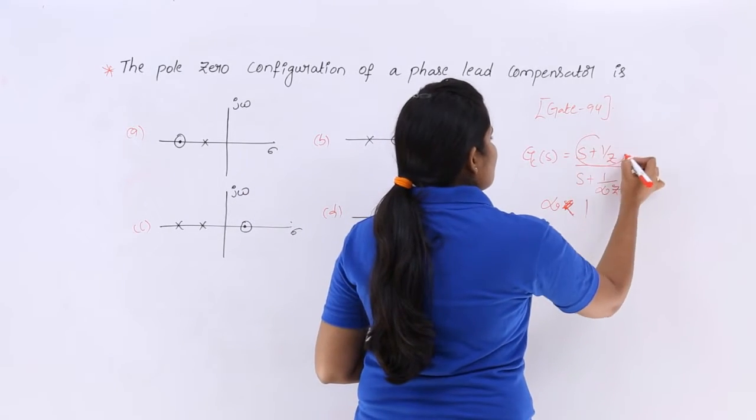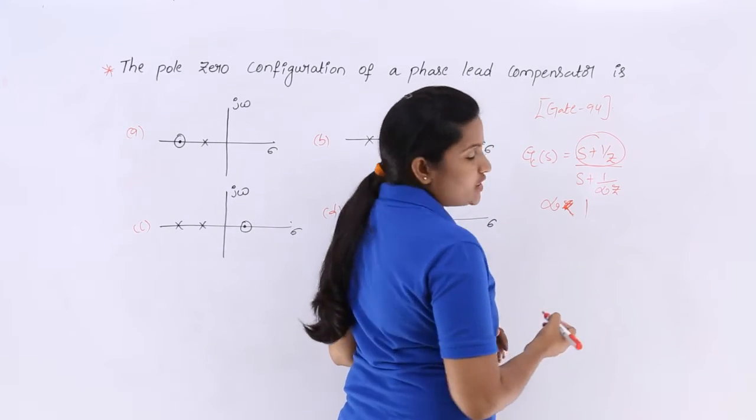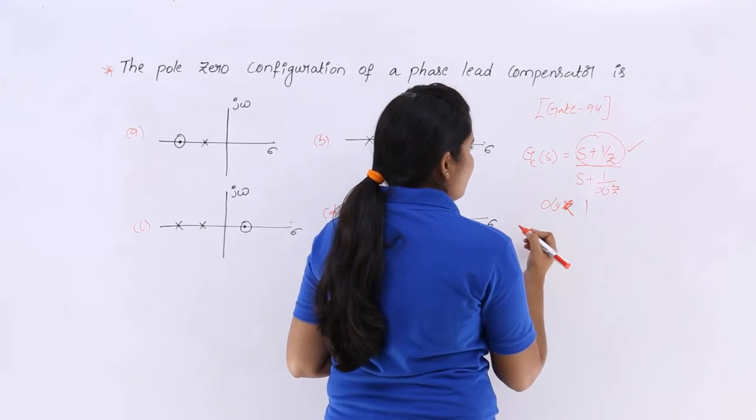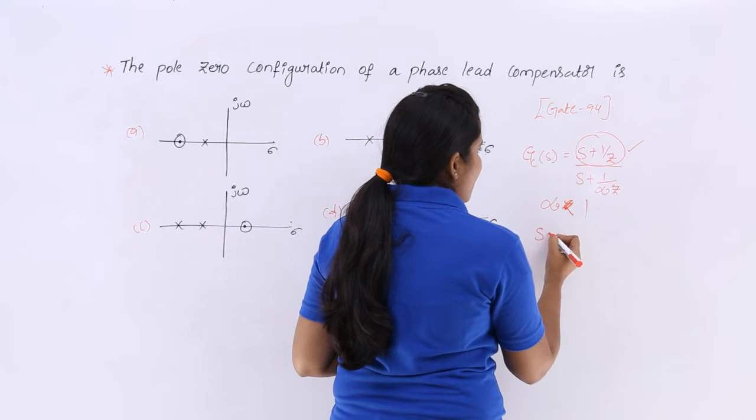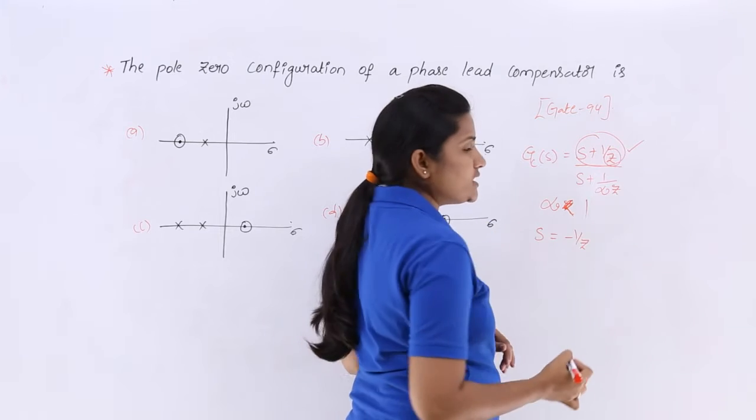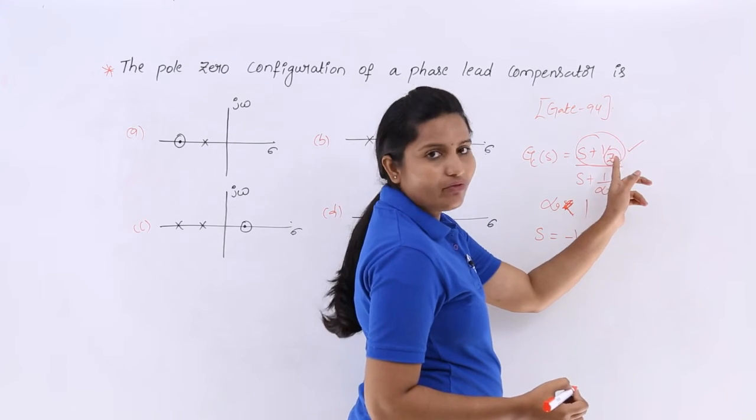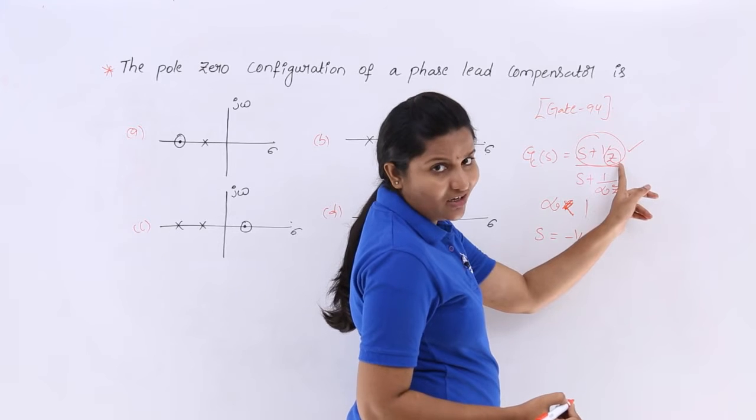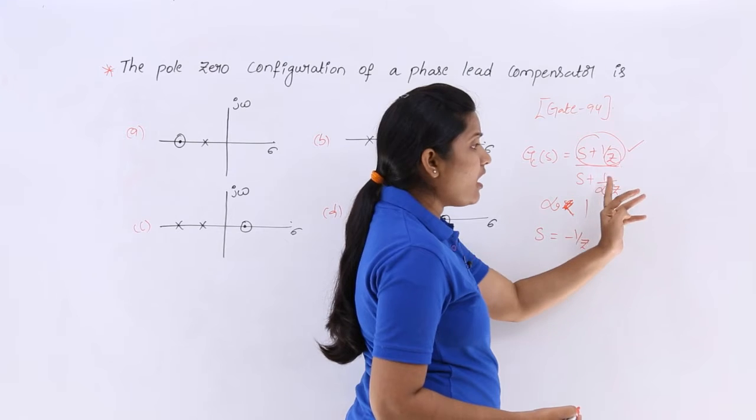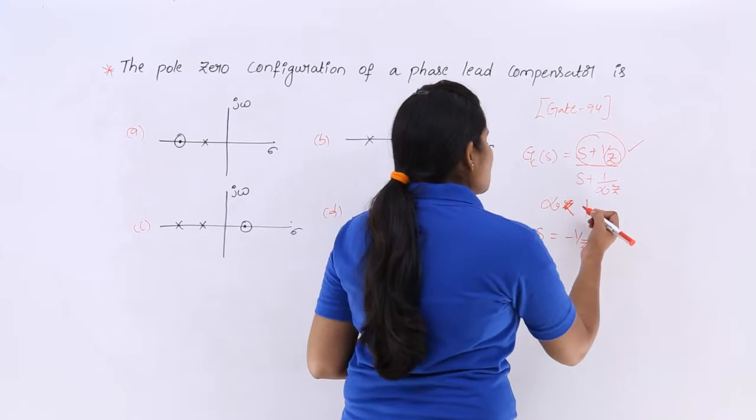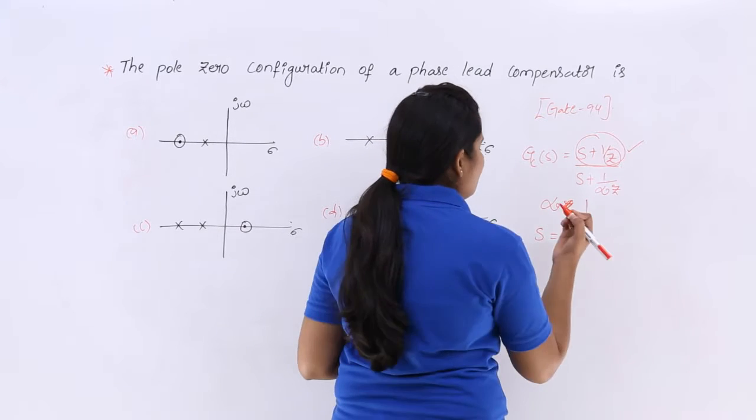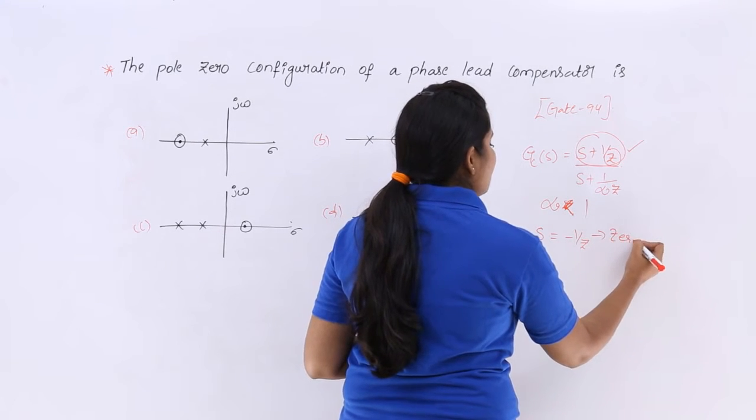Now if you consider poles and zeros, where you will get zeros, here you will get zeros and here one zero will be there. That zero value is equivalent to minus 1 by Z. If you are having confusion about this Z, you can replace Z by 1 by T. You can consider T also, T or any value. 1 by T plus 1 by alpha T like that also you can consider. Here S is equivalent to minus 1 by Z is one value and this is zero because this is in numerator.